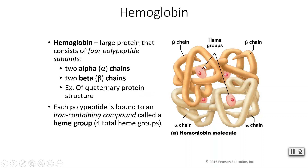Each of these heme groups contains iron. Iron is required for proper formation of hemoglobin, and so ultimately, iron is required for proper oxygen transportation.